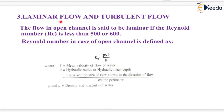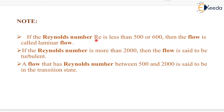Next is laminar flow and turbulent flow. The flow in open channel is said to be laminar if the Reynolds number, Re, is less than 500 or 600. Reynolds number in case of open channel flow is defined as Re = ρvr/μ, where v is the mean velocity of flow, r is the hydraulic radius or hydraulic mean depth — that is, cross-sectional area of flow normal to the direction of flow divided by the wetted perimeter — and ρ and μ are the density and viscosity of water. If Re is less than 500 or 600, the flow is laminar; if Re is more than 2000, the flow is turbulent; and if Re is between 500 and 2000, it is in the transition state.